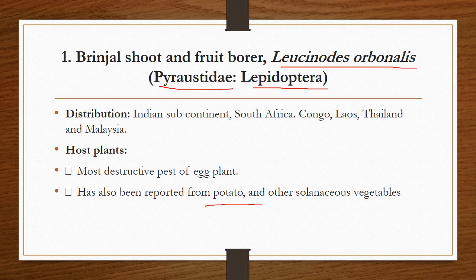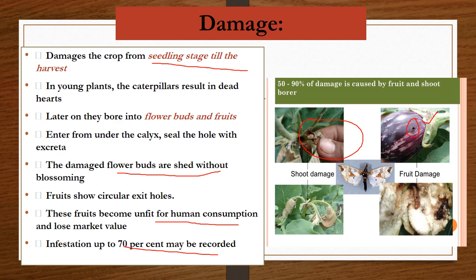Coming to the most important pest which causes severe damage in brinjal crop — that is the brinjal shoot and fruit borer. The scientific name is Leucinodes orbonalis, belonging to the family Pyralidae, order Lepidoptera. It is distributed throughout the Indian subcontinent and South Africa, Congo, Thailand, and Malaysia. It also causes severe damage in all South Asian countries and is a major pest of eggplant, also reported to attack other Solanaceae vegetables such as potato.